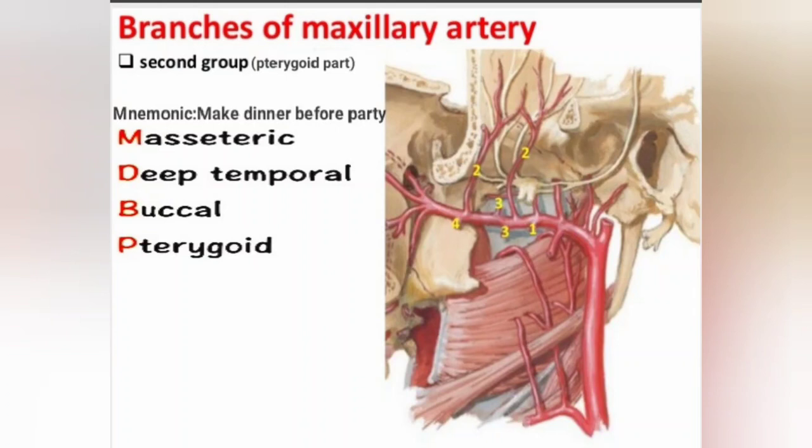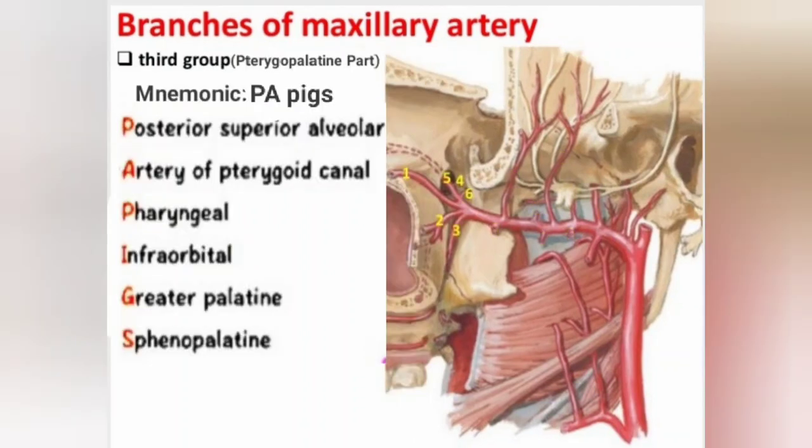The pterygoid part branches are: Masseteric, Deep temporal, Buccal, and Pterygoid muscles. For the third part, the pterygopalatine part, the mnemonic is P APEX: P — Posterior superior alveolar, A — Artery of pterygoid canal, P — Pharyngeal, E — (implied), X — Infraorbital and Greater palatine artery.